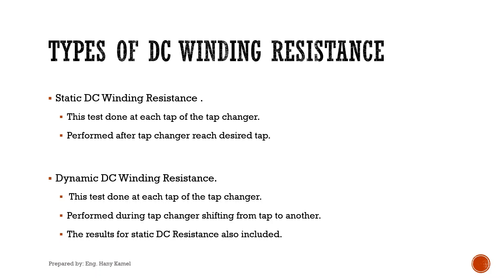Winding DC resistance test has two types: static and dynamic DC resistance. For static DC winding resistance, it is performed after the tap changer reaches each desired tap. For dynamic DC winding resistance, it is performed during tap changer shifting from one tap to another. Both tests are done at each tap of the tap changer. The results for static DC resistance will be included during the dynamic test, but if you perform only the static resistance, the dynamic values will not be measured.